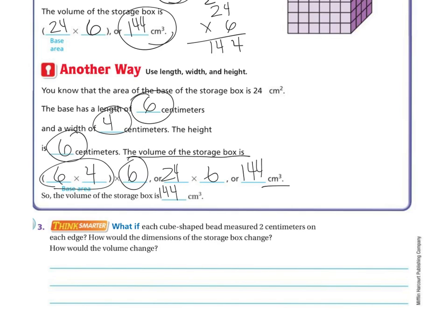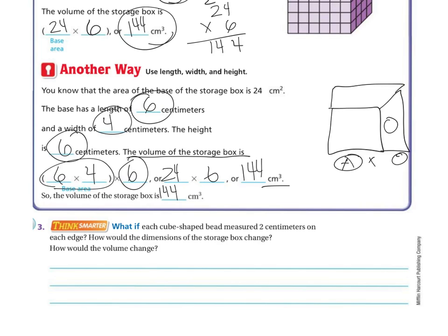Just want to make sure you know: with volume, it is always A times B times C — this number, times that number, times that number. You can do them in any order you want, though you should multiply the base first and then multiply by the height. That's usually easier.